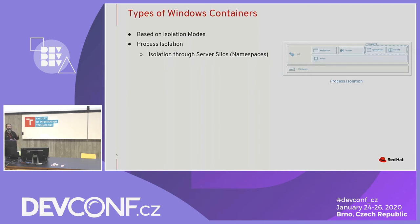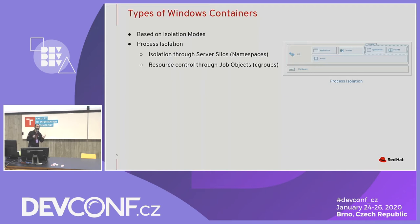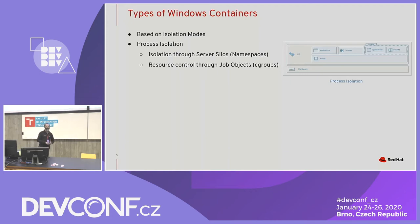Because of that, they came out with a construct which they call a silo. It's very close to namespaces, but doesn't work exactly in the way a namespace works. So that took care of namespacing. To handle resource control, they have a construct called job objects — a job object can be used to control a set of Windows processes — and they decided to use it for their containers.